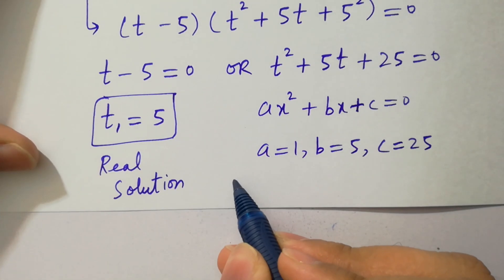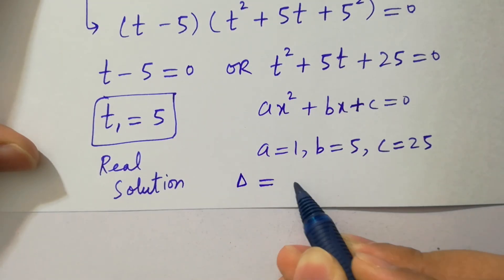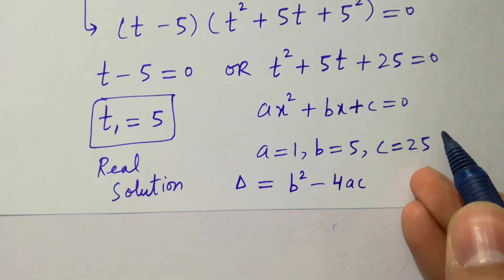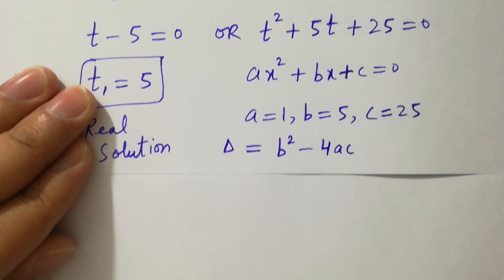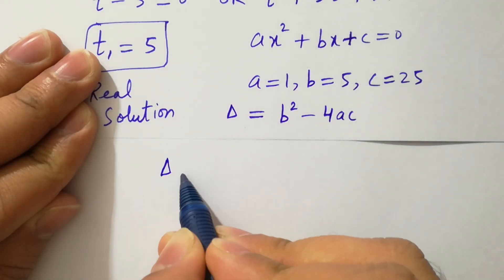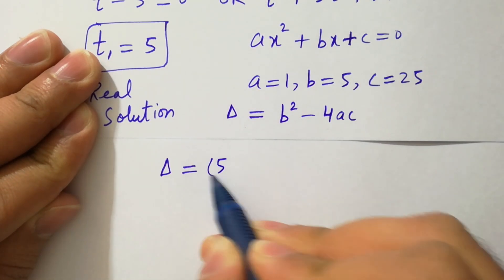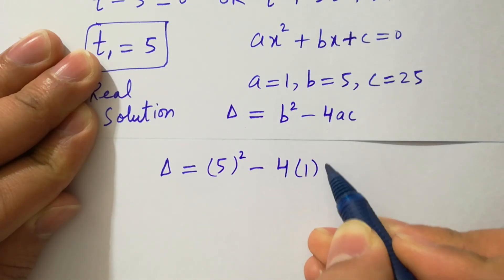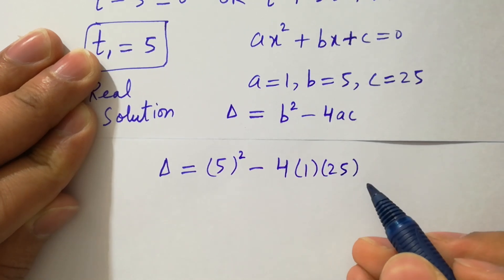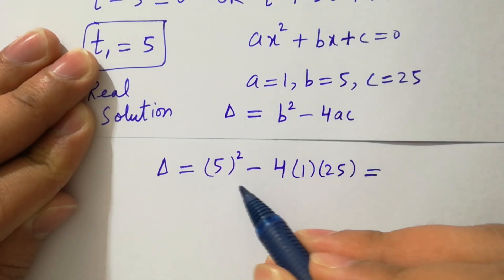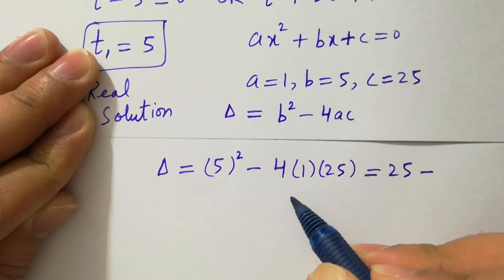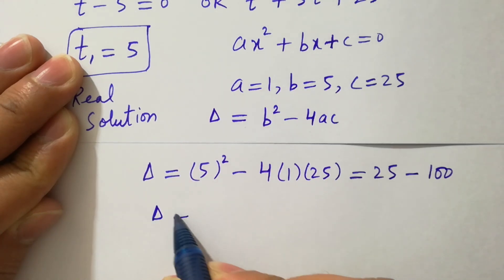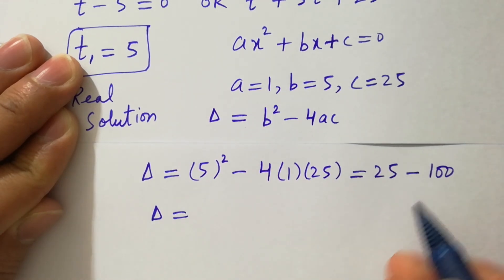We can find the discriminant, which is equal to b squared minus 4ac. With b equal to 5, a equal to 1, and c equal to 25, we have 25 minus 4 times 25, which is 100. So the discriminant equals 25 minus 100, which is minus 75.